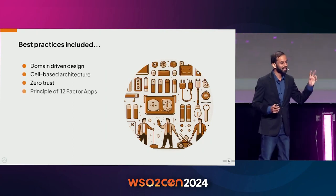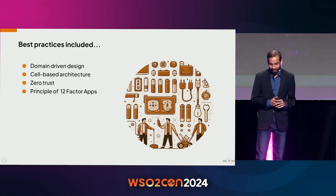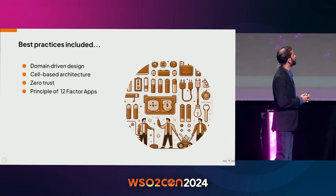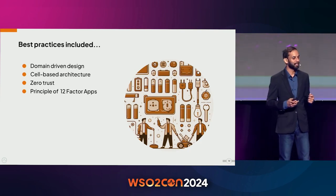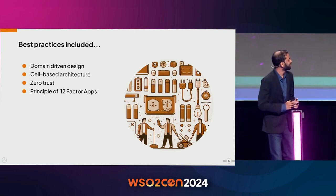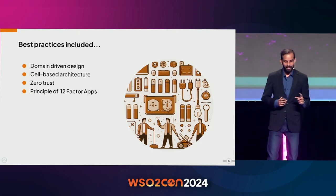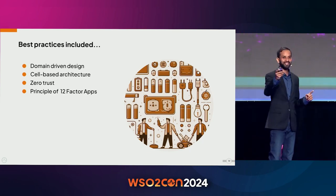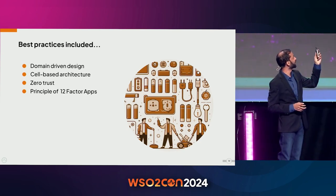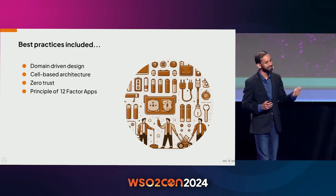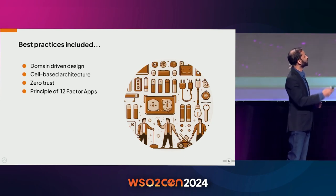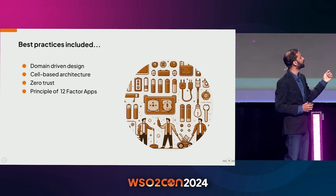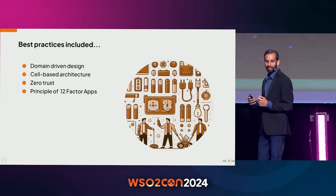That was a fraction of the features Choreo provides to fast-track your application development. On top of all these, we encourage and help developers follow industry best practices when developing applications: domain-driven design, cell-based architecture, zero trust, and the 12-factor application principles. Choreo is designed in a way that makes it easy to follow these principles. Lakmal is doing a session tomorrow at 9 a.m. on the solution architects track with very detailed information on domain-driven design, cell-based architecture, and zero trust — I recommend attending if you're building cloud native applications.